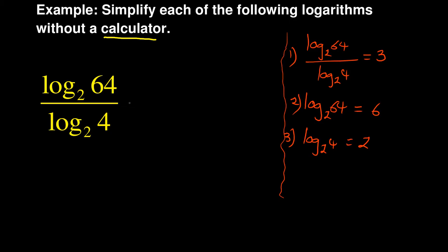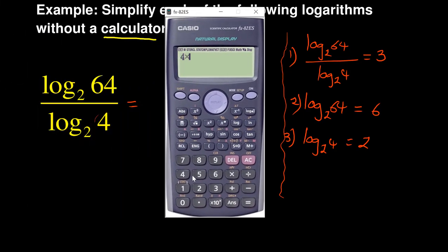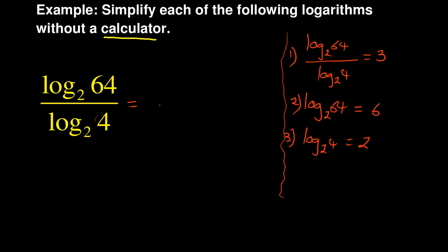There are two ways you could have approached this. I'm going to start with the simpler version. If you know your times tables, you can know that 4 and 64 are linked together. If you take a calculator, 4 times 4 is 16, times 4 is 64. So you see that 4 to the power of 3 is 64. What I will have here is log base 2 of 4 to the power of 3 over log base 2 of 4.